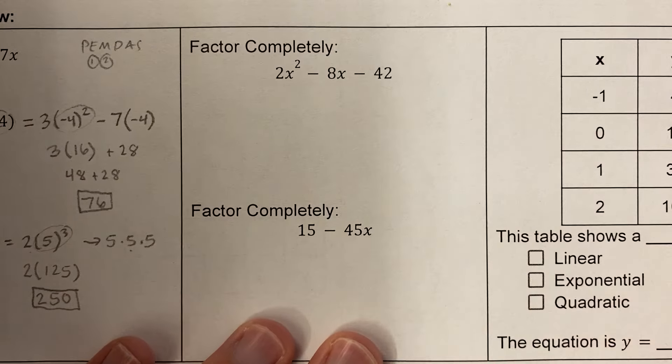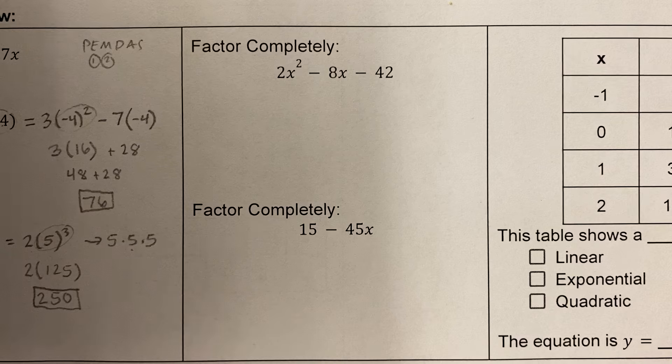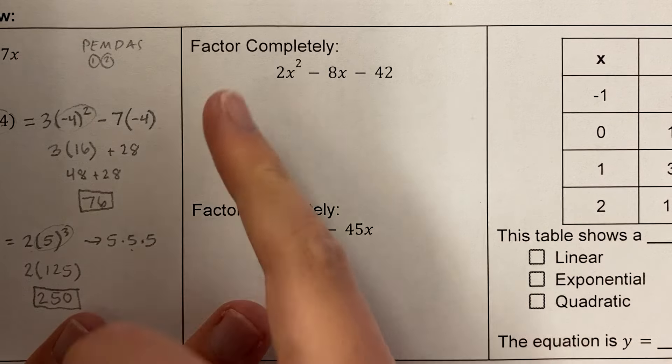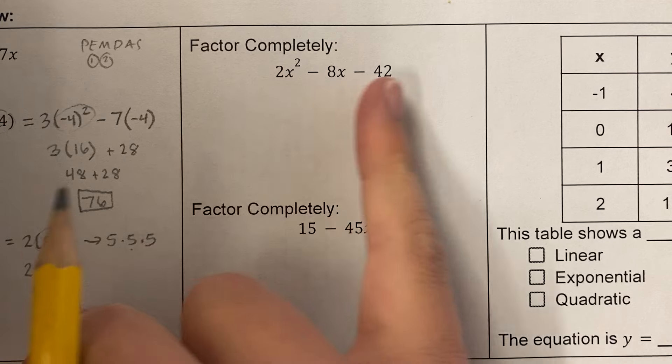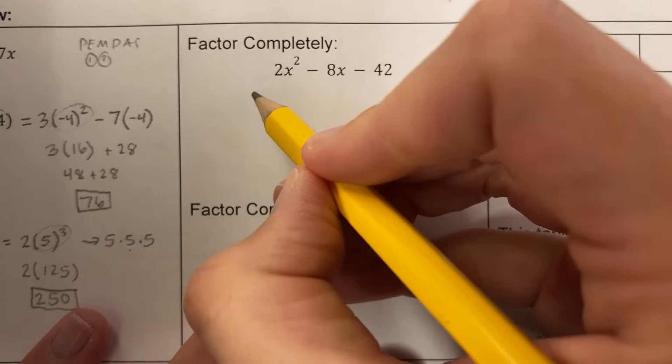Both of these problems say factor completely. So the first question you always ask yourself, always, always, is, is there a greatest common factor? And I'm looking, and I see, is there a number that multiplies to 2, 8, and 42? And the answer is, yeah, 2 multiplies to 2, 8, and 42. So let's take out a 2.